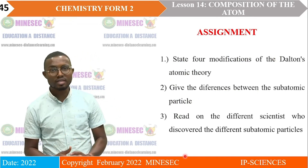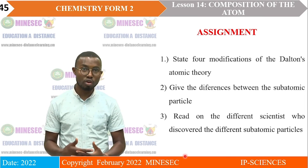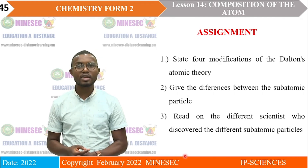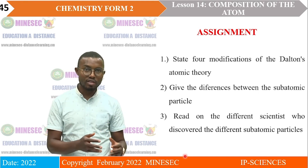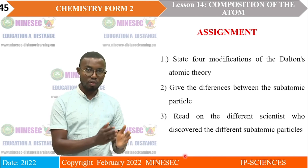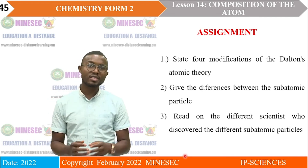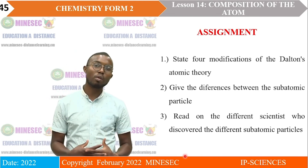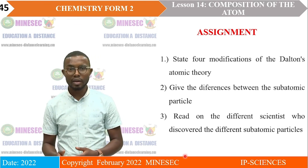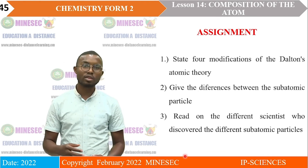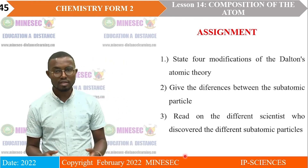As today's assignment: first, state four modifications of Dalton's atomic theory. Second, give the differences between the subatomic particles — the protons, neutrons, and electrons. Also, read about the different scientists who discovered the different subatomic particles. In the next lesson, I am expecting you to tell me who discovered the proton, who discovered the neutron, and who discovered the electron. That is the assignment to complete before the next lesson.